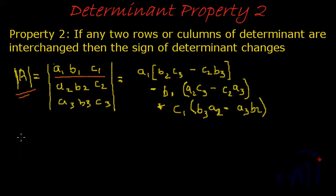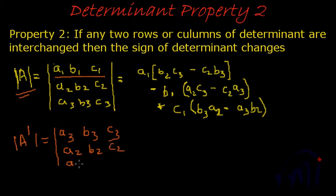Now let us derive A dash, which is the determinant derived by interchanging row 1 with row 3. Then this becomes A3 B3 C3, A2 B2 C2, and A1 B1 C1.